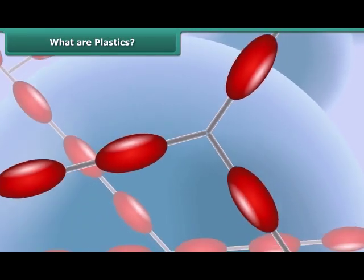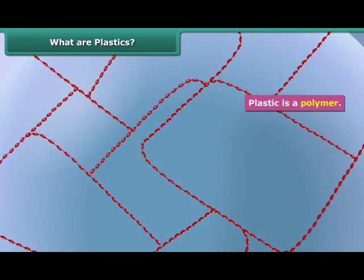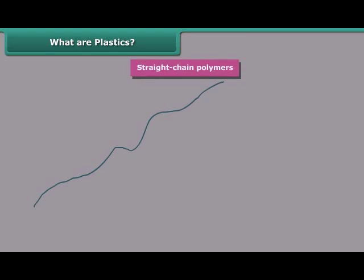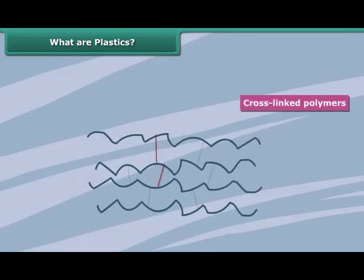Like the synthetic fibres, plastic is also a polymer that is made by joining many small similar units. Do all the plastics have the same type of arrangement of units? No. Some plastics have a linear arrangement, whereas others are cross-linked.